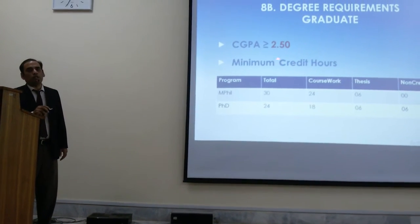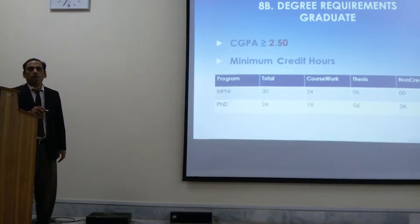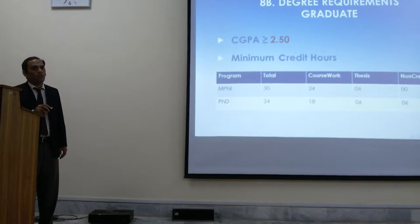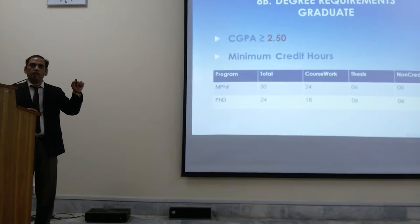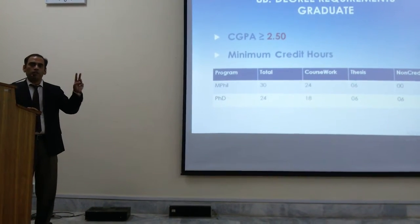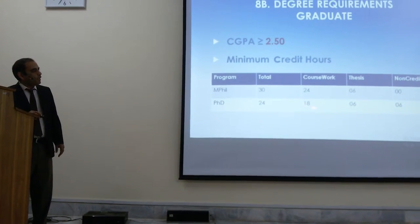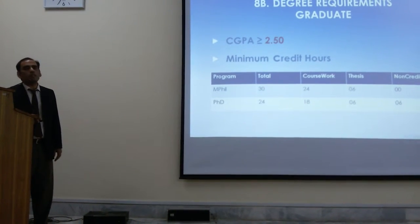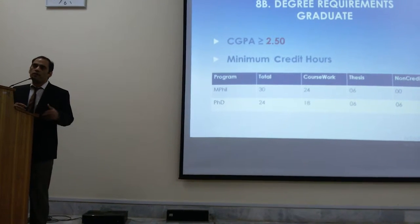For PhD, the CGPA required to get the degree is 3. So, to summarize: 2 for BS undergraduate, 2.5 for MPhil, and 3 for PhD. For PhD, they have 18 credit hours of coursework, 6 for thesis, and 6 credit hours in 2 non-credit courses.